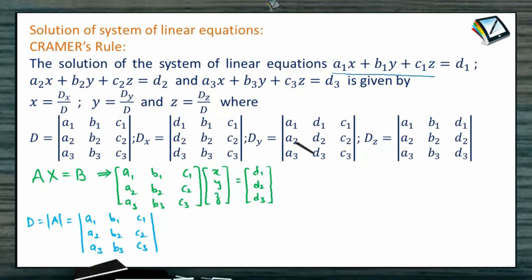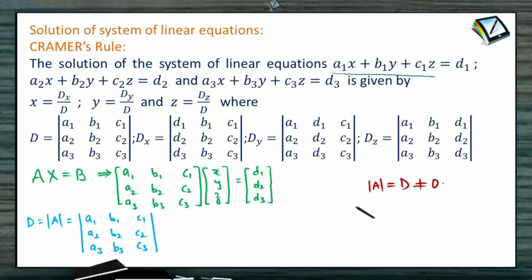An important condition for Cramer's Rule: this procedure is valid only when the determinant of A, denoted D, is non-zero. If D is zero, the denominator is zero and Cramer's Rule does not work. So the main requirement for Cramer's Rule to apply is that D must be non-zero. Additionally, this rule is applicable only for a non-homogeneous system.